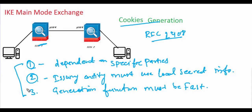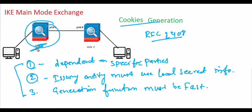The generation method must satisfy these criteria: cookie generation is dependent on specific parties, including source IP, destination IP, and the issuing entity's locally secret information. The issuing entity uses that local secret while generating the cookie.